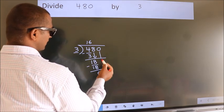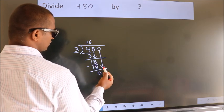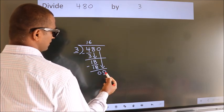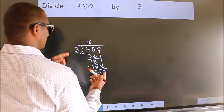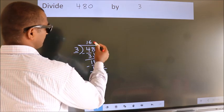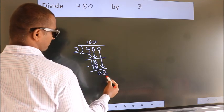After this, bring down the beside number. So 0 down, making 0. When do we get 0 in the 3 table? 3 times 0 is 0.